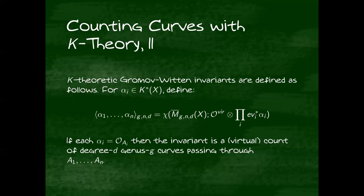If each of these alpha_i's is actually the structure sheaf of some variety a_i, then this invariant we've defined represents some virtual, whatever that means, count of degree d genus g curves passing through a_1 to a_n. Basically, we're saying the first marked point has to land in a_1, the second marked point has to land in a_2, the third marked point has to land in a_3, etc. Yeah, these invariants are introduced by Givental and Lee as kind of a K-theoretic generalization of the usual Gromov-Witten invariants introduced by Kontsevich.